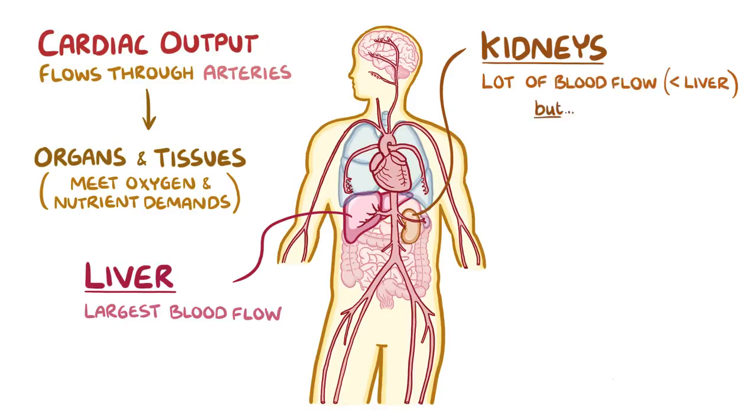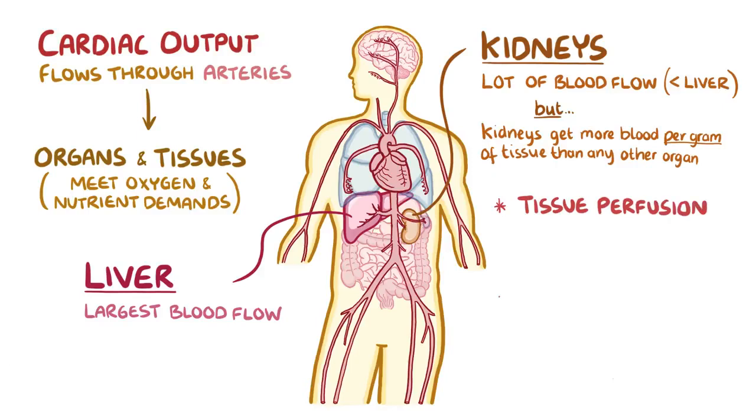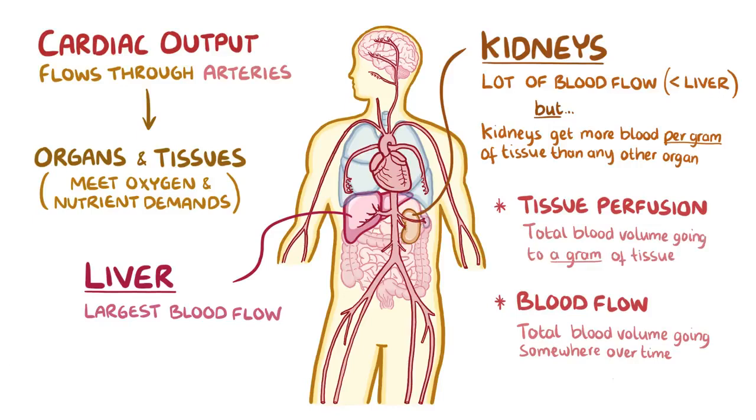However, when correcting for the mass of these tissues, the kidney gets much more blood per gram of tissue than any other organ, and this is called tissue perfusion. So, blood flow refers to the total amount of blood volume going someplace like an organ over time, and perfusion refers to the total amount of blood volume going to one gram of tissue over time.